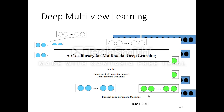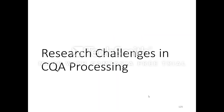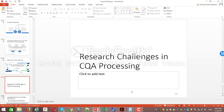That concludes a brief overview of multi-view learning, which is important because QA processing is one specific kind of multi-view learning where view one is question data and view two is answer data, both being textual. In the next video, we will look at research challenges in CQA processing and some datasets for CQA processing.